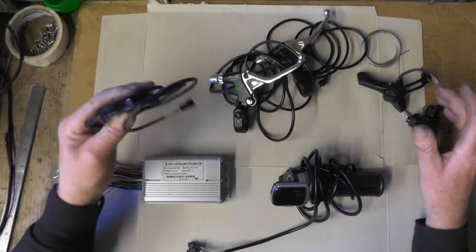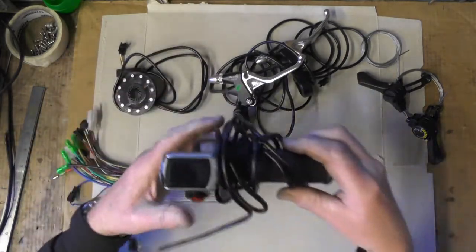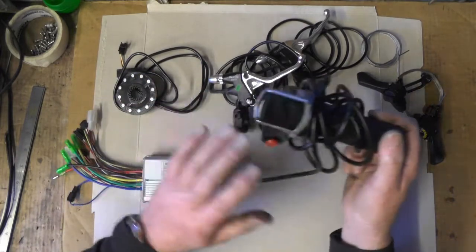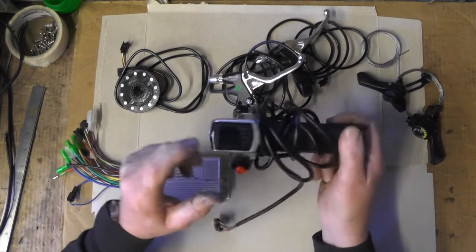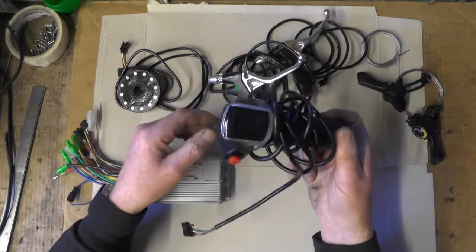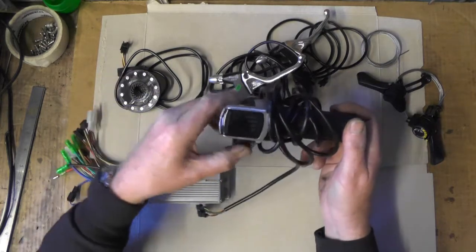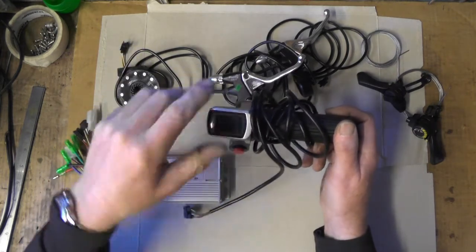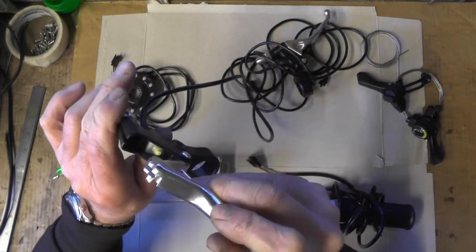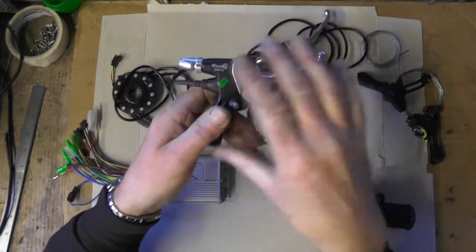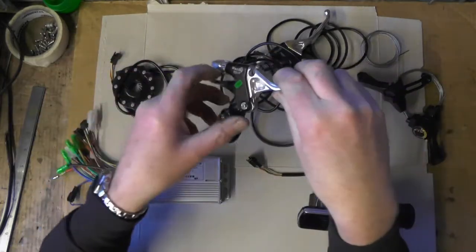You're going to need a pedal assist sensor—that's the magnet and the actual sensor pickup. You're going to need a throttle if you want to go that route. You can have both or either, it's up to you. I picked this throttle at a good price; it's already got the battery indicator and the on-off switch. If you don't want the throttle route, you'd have to buy a little LED controller for your handlebars. You'll also want some cutoff brakes with a micro switch incorporated for safety; that'll cut your power off to your pedal assist or throttle or both.